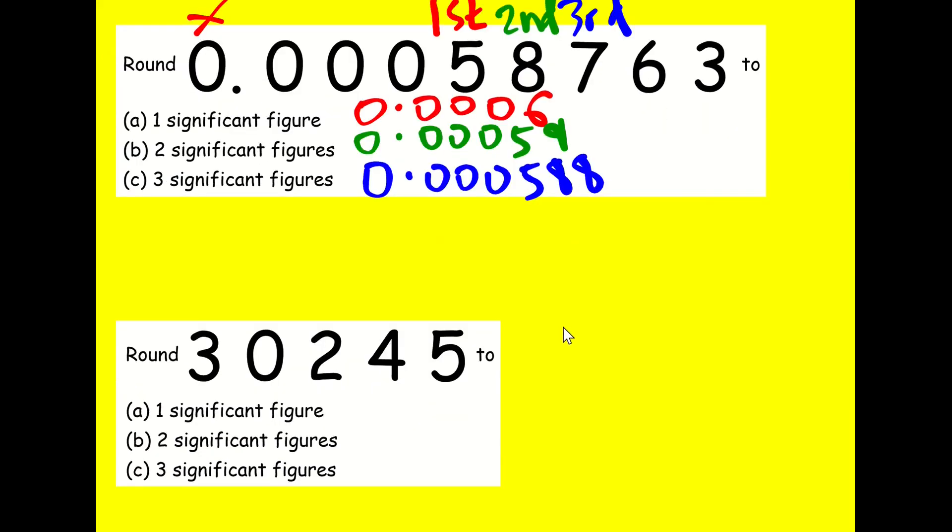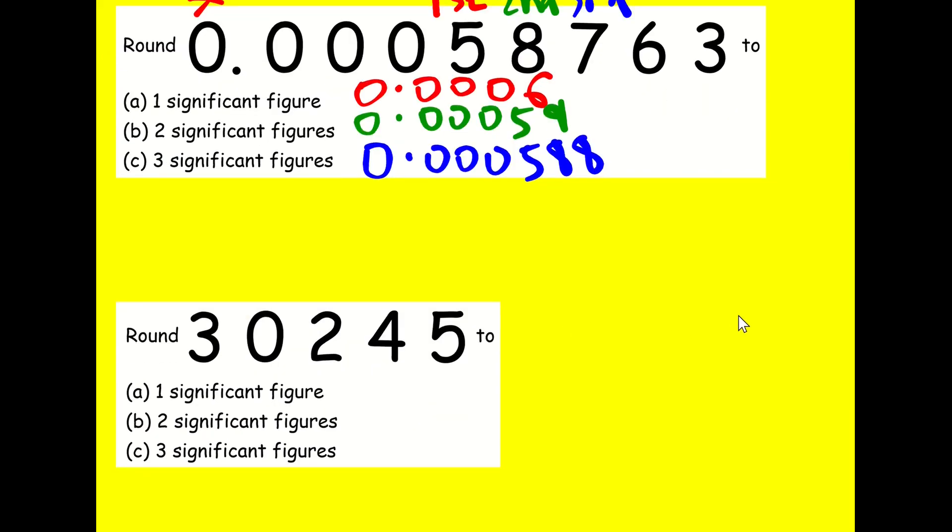OK, one more example. Again, if you'd like to pause the video and have a go at this one. Otherwise, I'm going to go through it. Right. So now the three is our first figure and that becomes our first significant figure. Now, do we include this zero as a significant figure? Yes or no? Hopefully you've thought about that. The answer is yes.